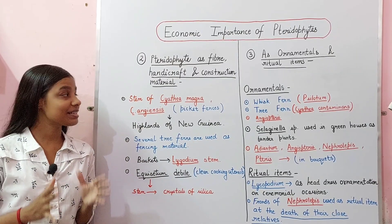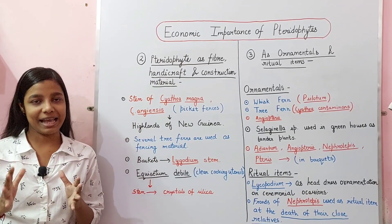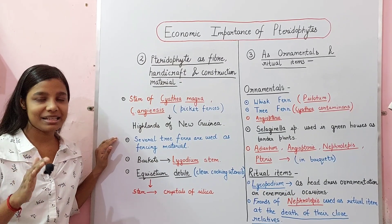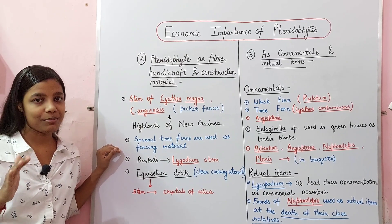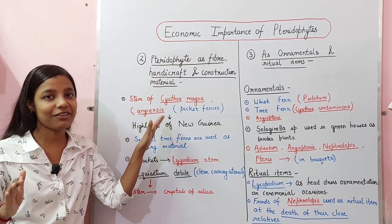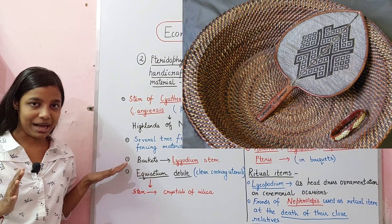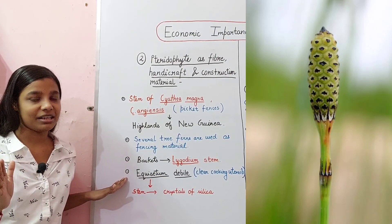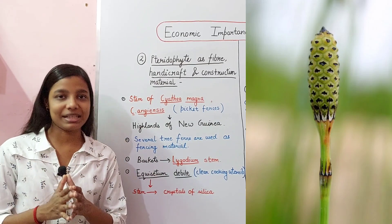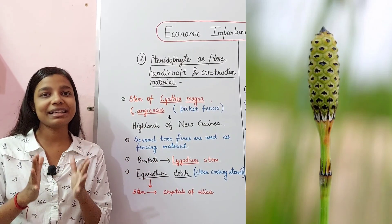Next, pteridophytes as fiber, handicraft, and construction material. Tree ferns — specifically Cyathea — are used as fencing material; the stems of Cyathea magna and Cyathea angiensis are used in picket fences in the highlands of New Guinea. The stem of Lygodium is used in making baskets. Equisetum debile is used in cleaning cooking utensils because its stem contains crystals of silica, making it an important cleaning agent.